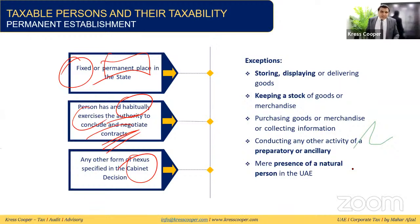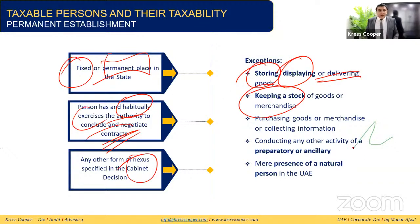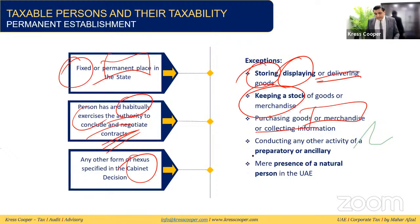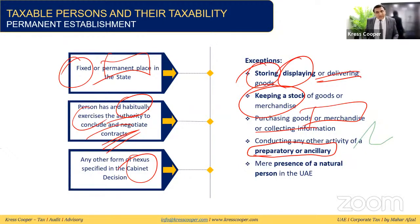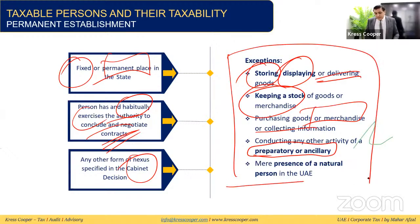There are exceptions to PE. Activities such as storing, displaying, or delivering goods on behalf of a non-resident person, purchasing goods and merchandise, supporting activities for the non-resident person, or mere presence of a natural person in the UAE who does not have full authority to act on behalf of the non-resident person or who is not exclusively working for them — these do not constitute a permanent establishment.